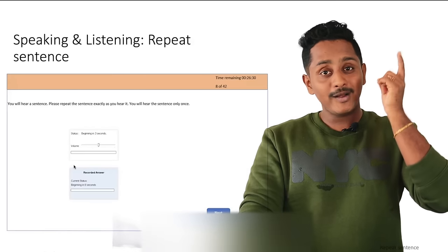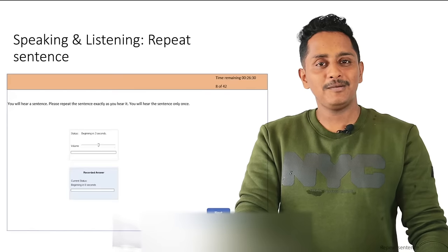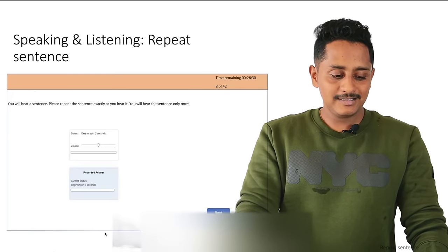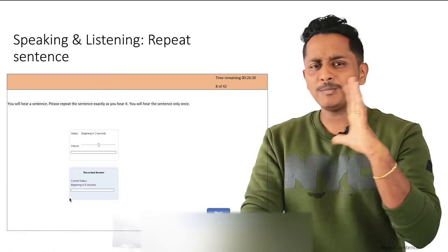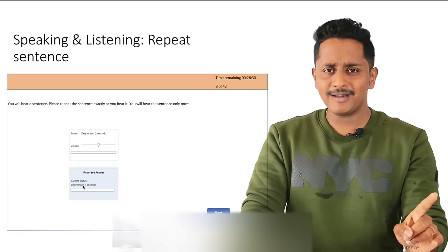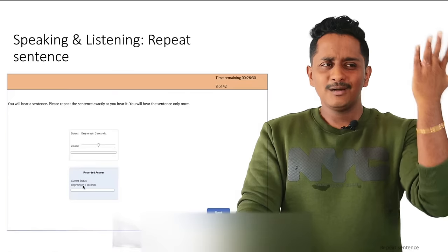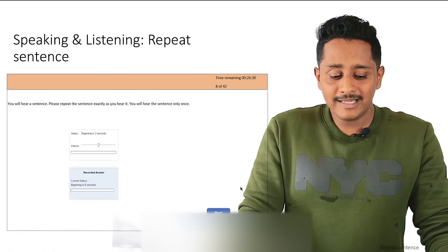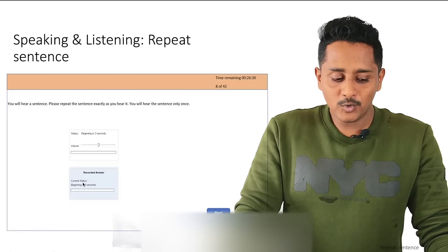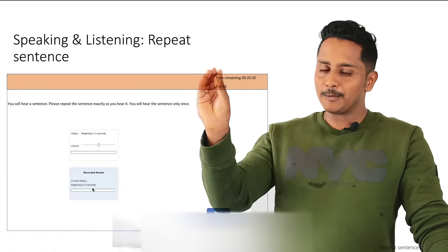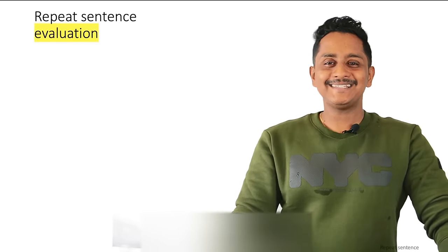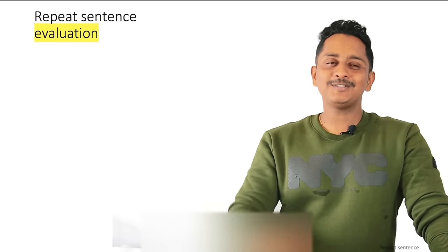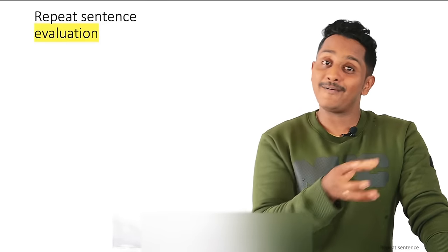It appears with a beginning countdown — after three seconds an audio will be played, you listen to the audio, then a brief delay, and then the recording begins. There will be a beep sound sometimes but sometimes there won't be. You see the recording start, speak your response, probably for three to four seconds, then immediately click the next button — don't wait for the recorder to complete.